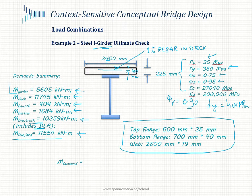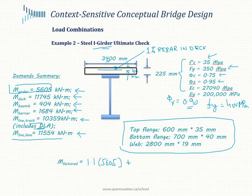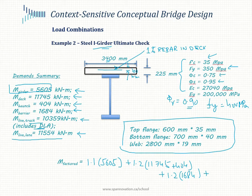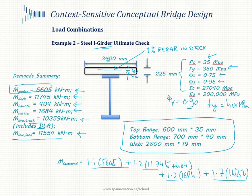The only factory-produced component is the girder, so it gets a factor of 1.1. So we have 1.1 × 5605, then 1.2 × 404 for the deck and haunch, and 1.2 × 1684 for the barrier cast on site. There's no DLA for lane loading, so the live load factor is 1.7 × 11554.